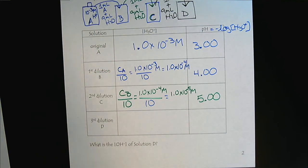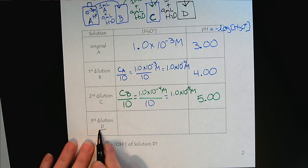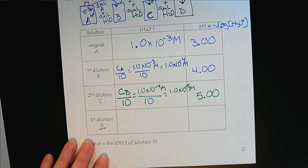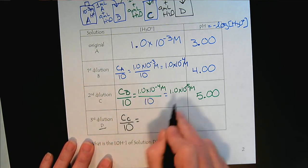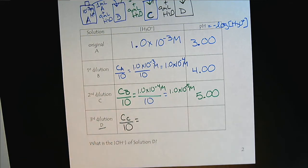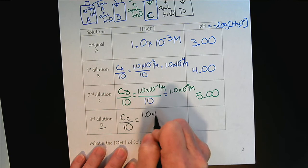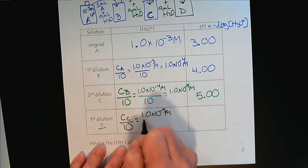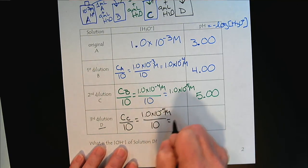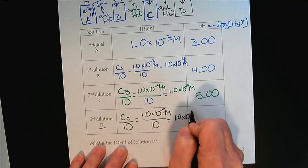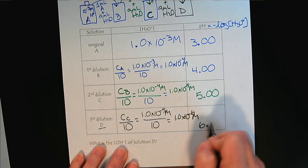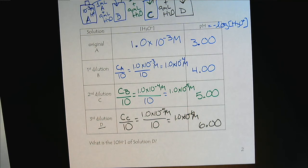And then lastly, to determine the concentration of solution D, we would take the concentration of C and divide by 10. So the concentration of C, we determined to be 1.0 times 10 to the minus 5 molar, divide by 10. 1.0 times 10 to the minus 6 molar, which of course would be a pH of 6.00.